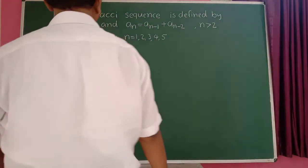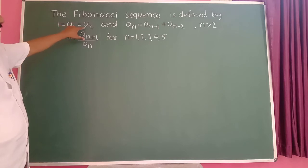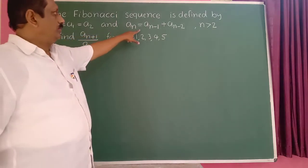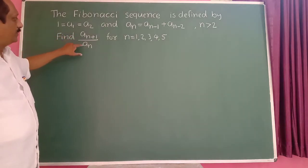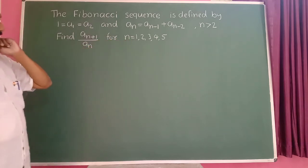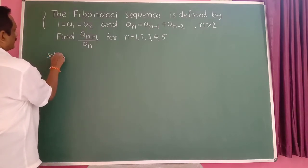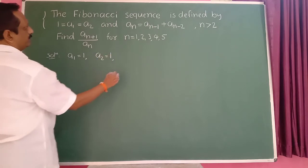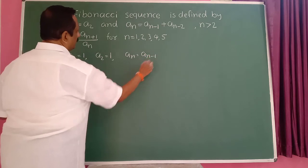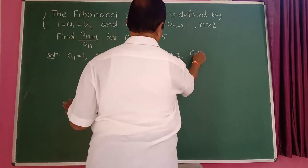The Fibonacci sequence is defined by a_1 is equal to a_2 equal to 1 for the first two terms, and a_n is equal to a_(n-1) plus a_(n-2) where n is greater than 2. Find a_(n+1) upon a_n for n equal to 1, 2, 3, 4, 5.